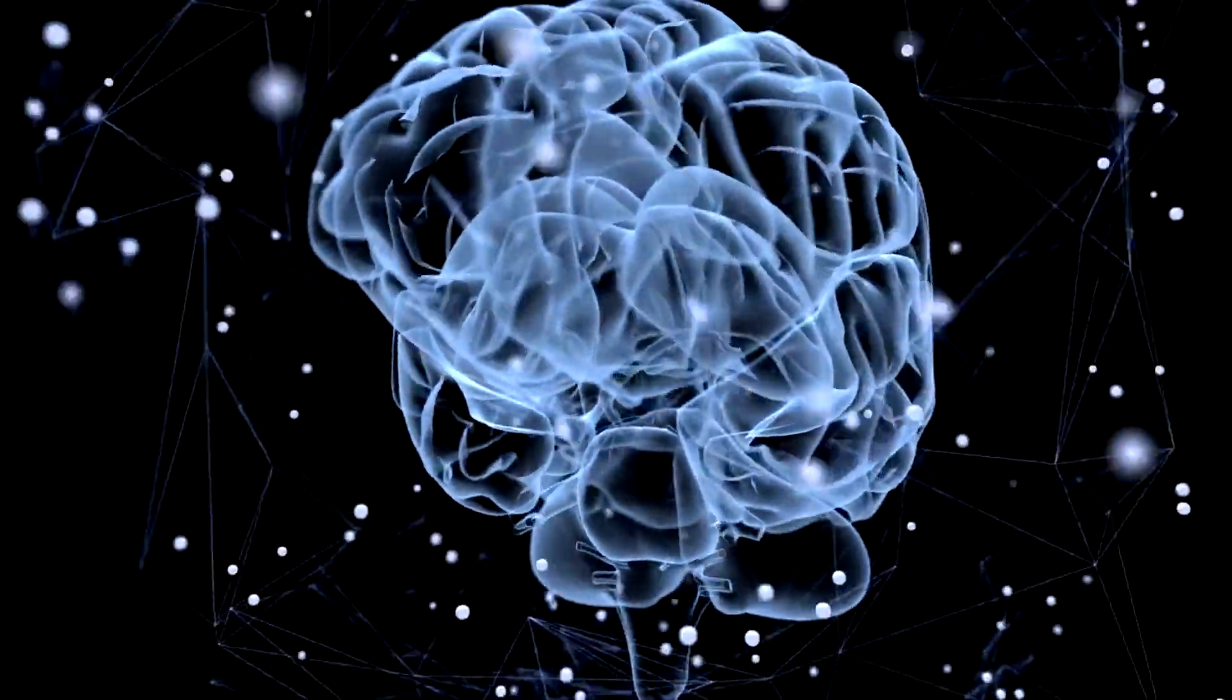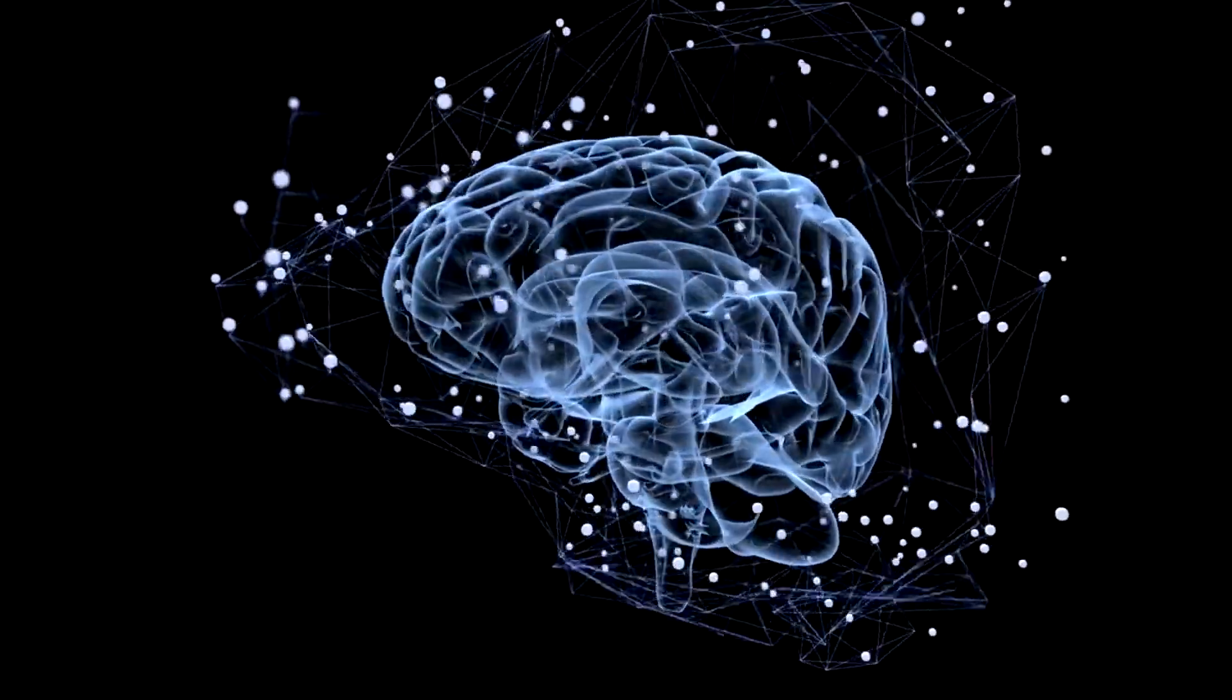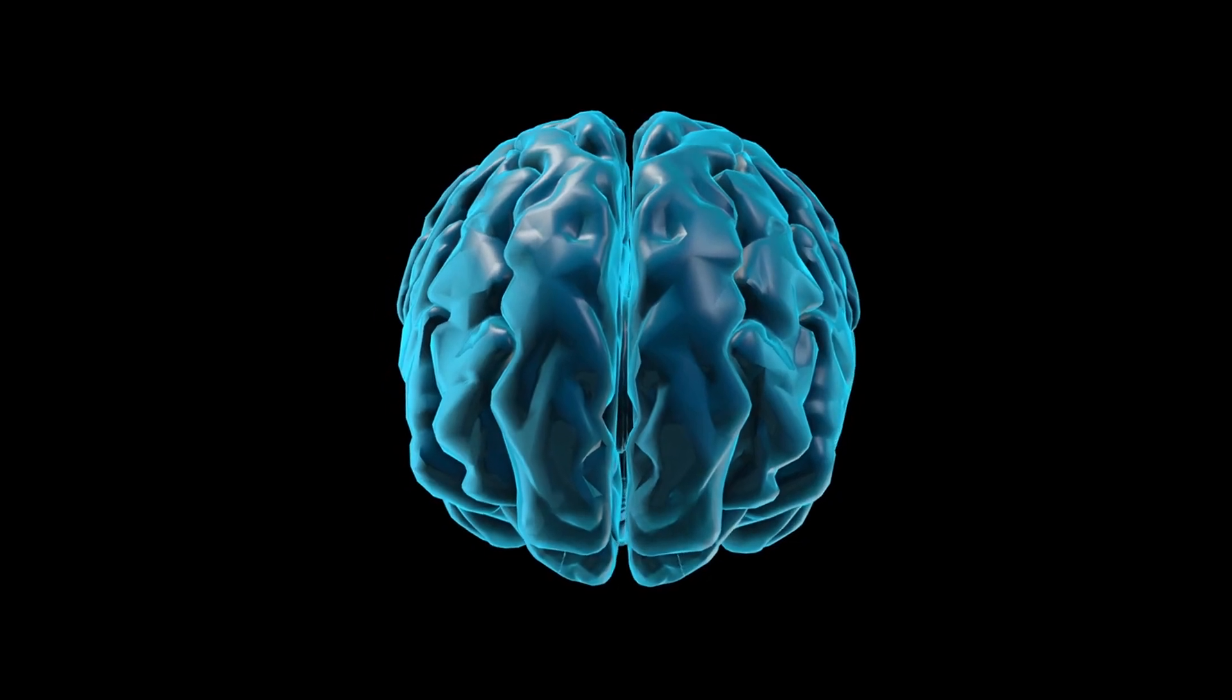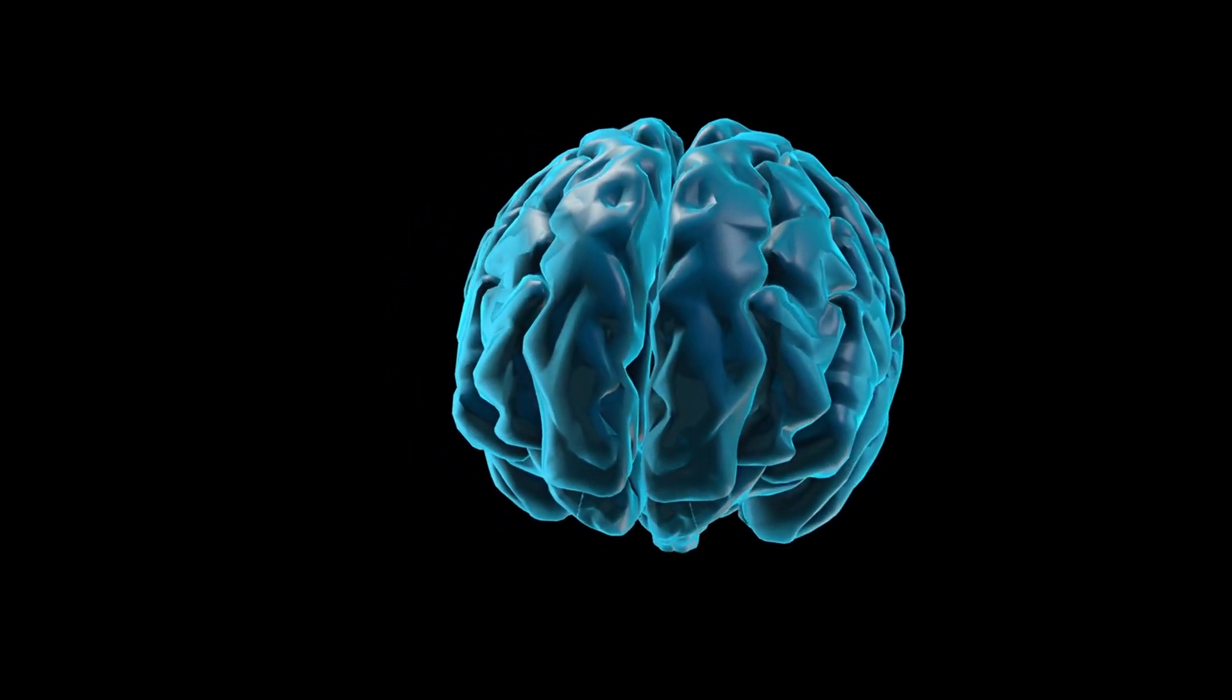The frontal lobe is involved in executive functions such as decision-making, problem-solving, and planning. It's also where our personality and ability to communicate are largely housed.